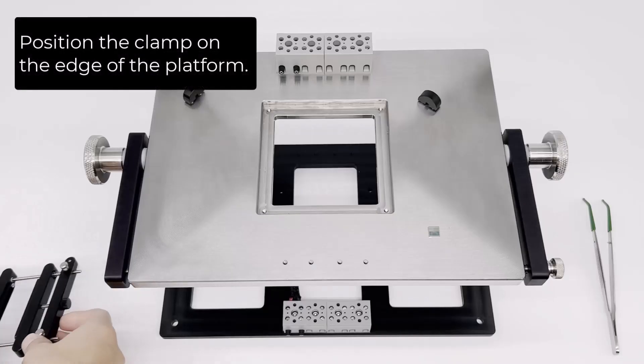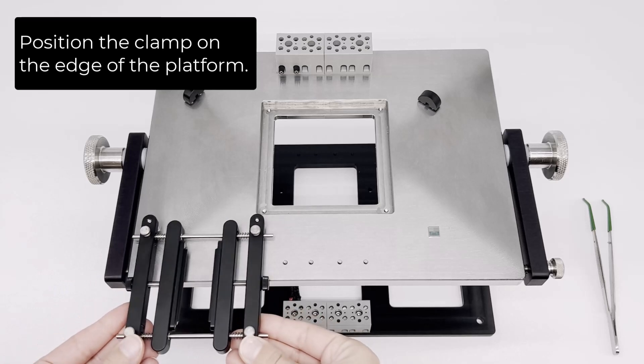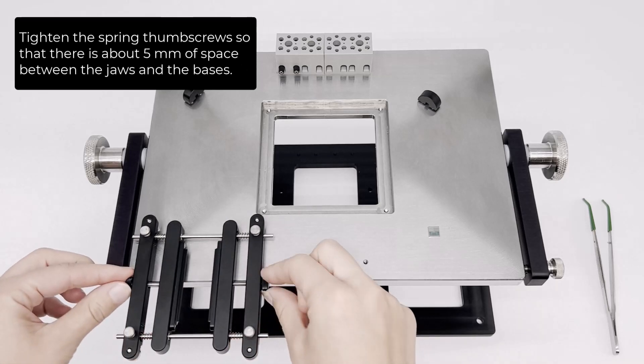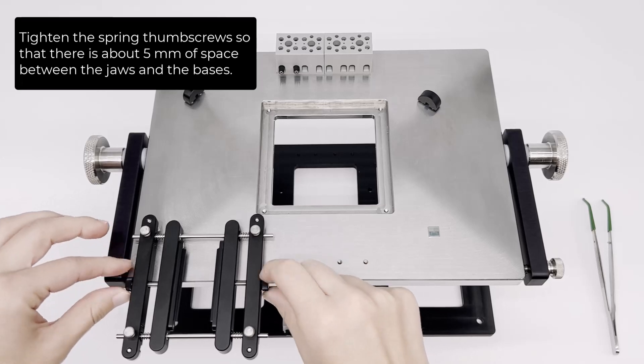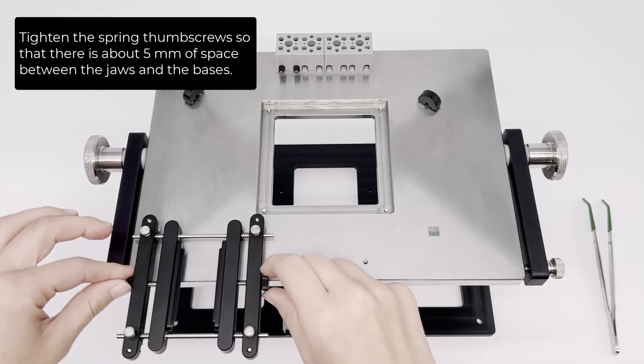Position the clamp on the edge of the platform. Tighten the spring thumb screws so that there is about five millimeters of space between the jaws and the bases.